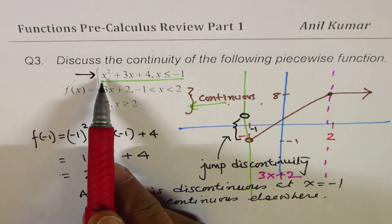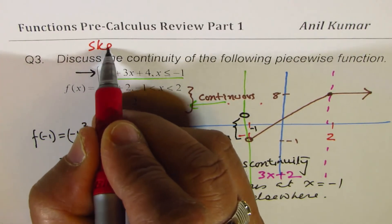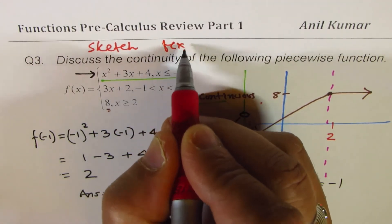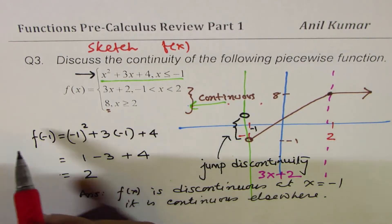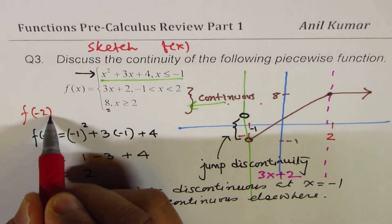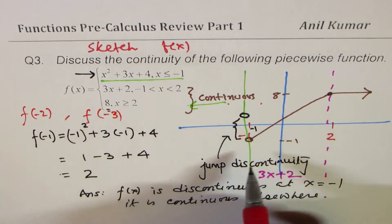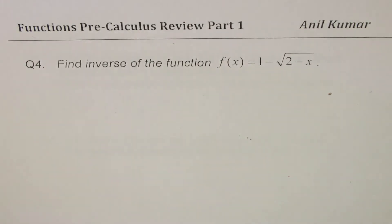As an exercise, sketch this function — it's a parabola opening upwards. Take a few more points, check the values for f(-2) and f(-3) to get additional points and then sketch it. Let's move on to question number 4.